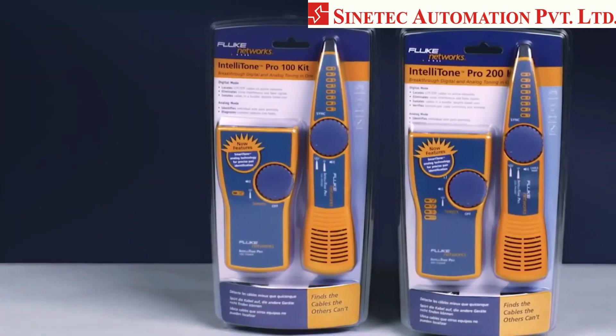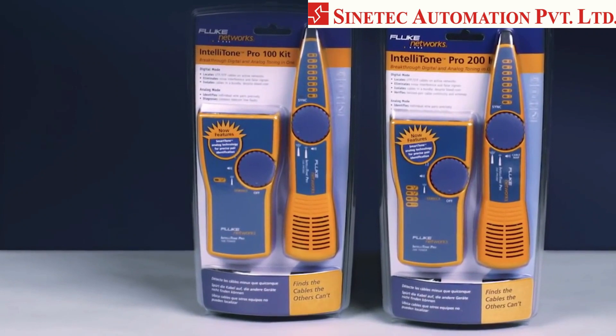Find cables the others can't. Get the IntelliTone Pro from Fluke Networks. There are two different models to choose from. The IntelliTone Pro 100, designed for single-line telco applications. And the 200, used for two-line applications and includes a jack on the probe for wire mapping.